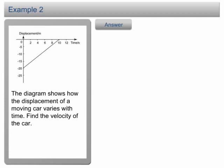Example 2. The diagram shows how the displacement of a moving car varies over time. Find the velocity of the car.